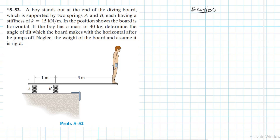The boy's mass is 40 kg. Converting it to weight, we multiply by the acceleration due to gravity, which is 9.81. So 40 × 9.81 gives us 392.4 Newtons. This is the weight of the boy.